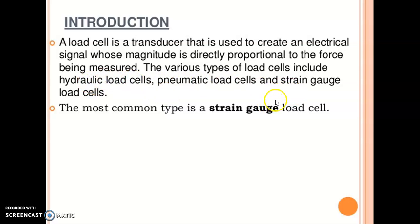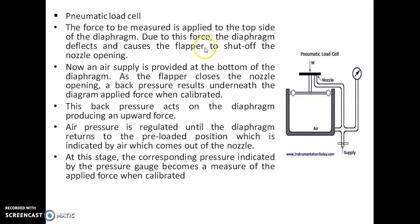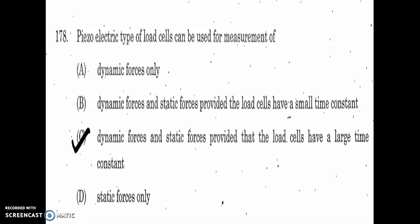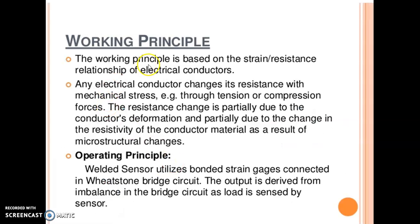Various types of load cells include hydraulic load cell, pneumatic load cell, and strain gauge load cell. In a hydraulic load cell, when you apply a force, the pressure of the liquid increases, and this increasing liquid pressure becomes the measure of force. In the strain gauge load cell, when a force is applied, the resistance of the material increases. This increase in resistance is measured using a Wheatstone bridge circuit, and this will be the measure of the force — resistance changes due to mechanical stresses through tension or compression forces.